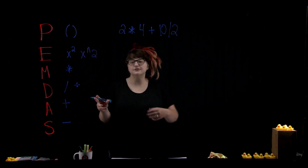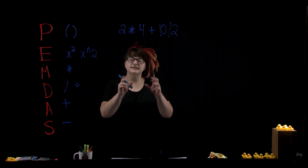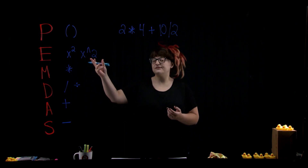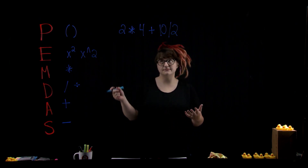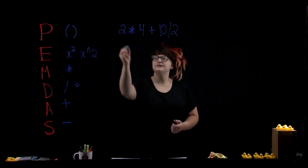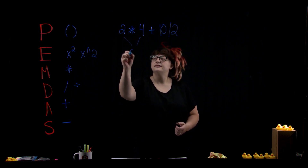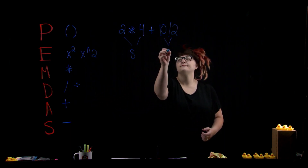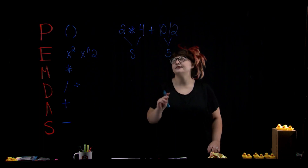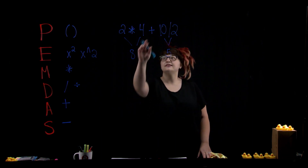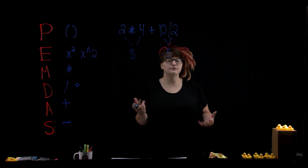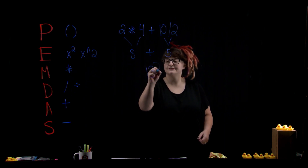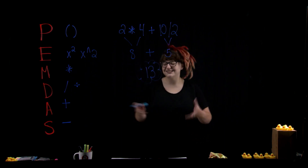So with an understanding of PEMDAS, let's recalculate this formula and get the correct answer. Do we have any parentheses? Nope. No exponents. Multiplication right here — so we know this is going to happen first, giving us 8. Any division? Yes — this leaves us with 5. So now we have 8 and 5, and we've only got one symbol left, our addition. So if we add these together, we get 13. Heck yeah! So by following PEMDAS, we got a whole different result — one formula has given us two separate results.